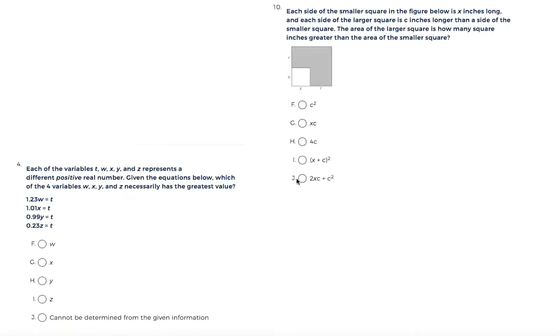Welcome to the next set of official ACT problems. Each of the variables t, w, x, y, and z represents a different positive real number. Given the equations below, which of the four variables w, x, y, and z necessarily has the greatest value?